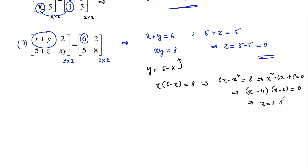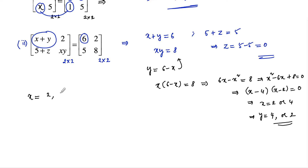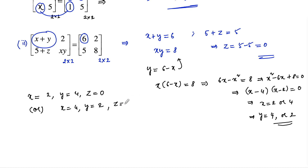So either x is equal to 2 or x is equal to 4. When x is equal to 2, y is equal to 6 minus 2, that is 4. When x is equal to 4, y is equal to 6 minus 4, that is 2. Therefore the solutions are: x is equal to 2, y is equal to 4, z is equal to 0, or x is equal to 4, y is equal to 2, z is equal to 0.